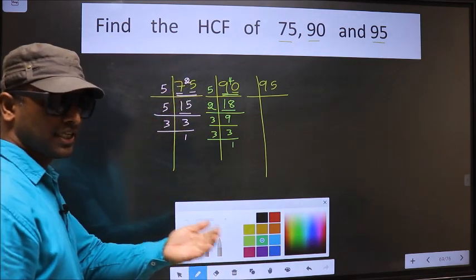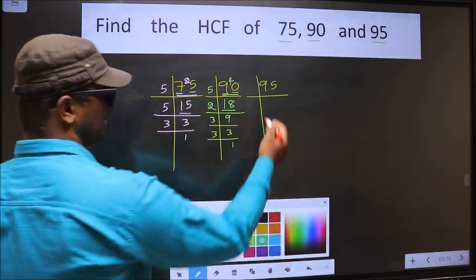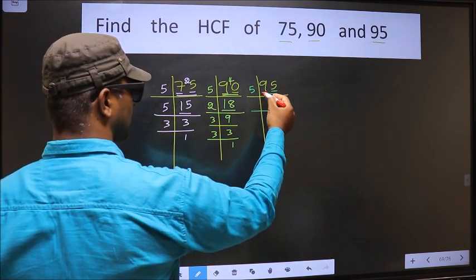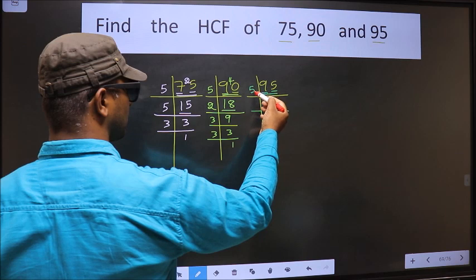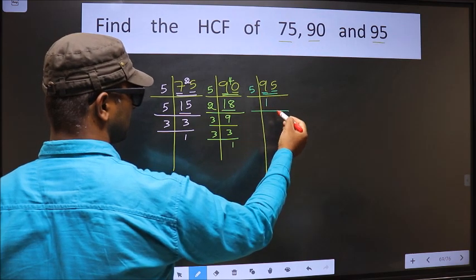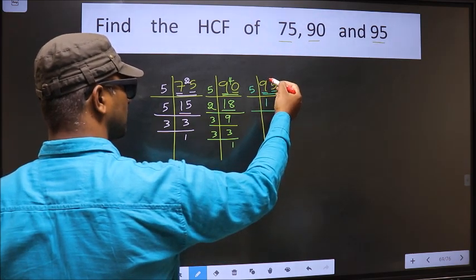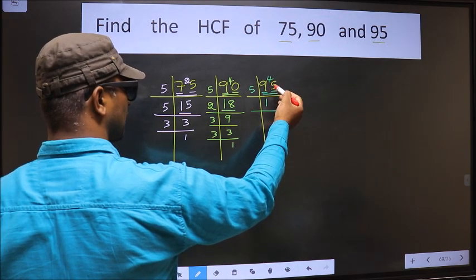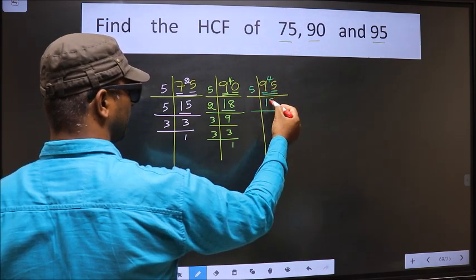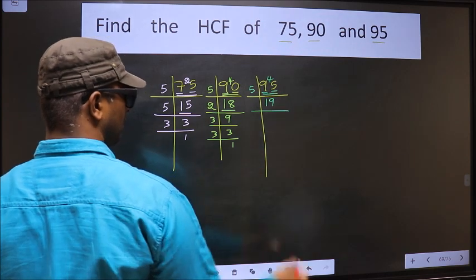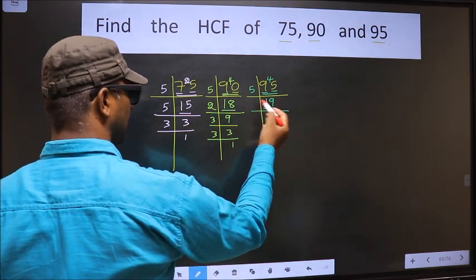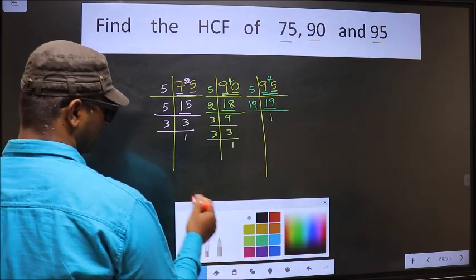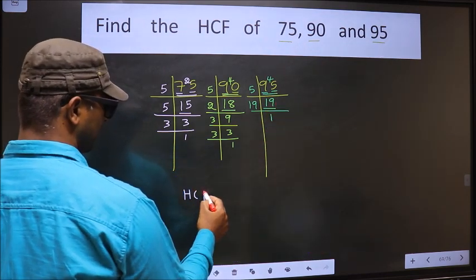Now the other number, 95. Last digit 5, so we take 5 here. The first number 9 — a number close to 9 in the 5 table is 5 once 5. 9 minus 5 is 4, carried forward making it 45. When do we get 45 in the 5 table? 5 nines is 45. Now here we have 19 — 19 is a prime number, so we take 19 once, 19.